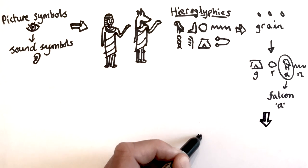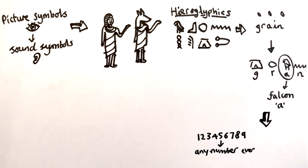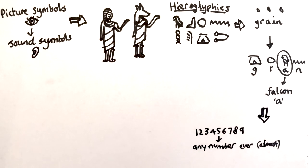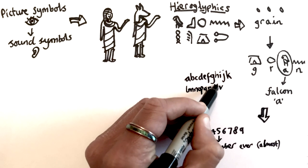But just like our number system, where we can make any number ever with just these digits, with sound symbols we can make any word ever just by learning the alphabet and the sounds each symbol makes.